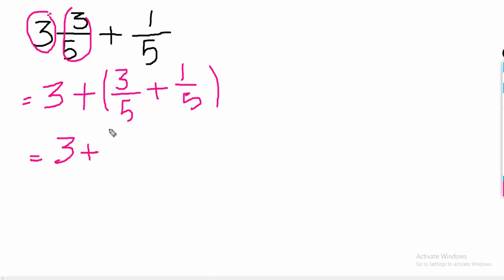3 plus, look at here, denominator is 5 and denominator is 5. Both are same then 5 is the LCM. Now, divide this 5 over this, answer will be 1 and 1 multiply 3, 3 ones are 3. Plus, 5 divided by 5 is equal to 1 and 1 multiply with this 1 and answer will be 1.